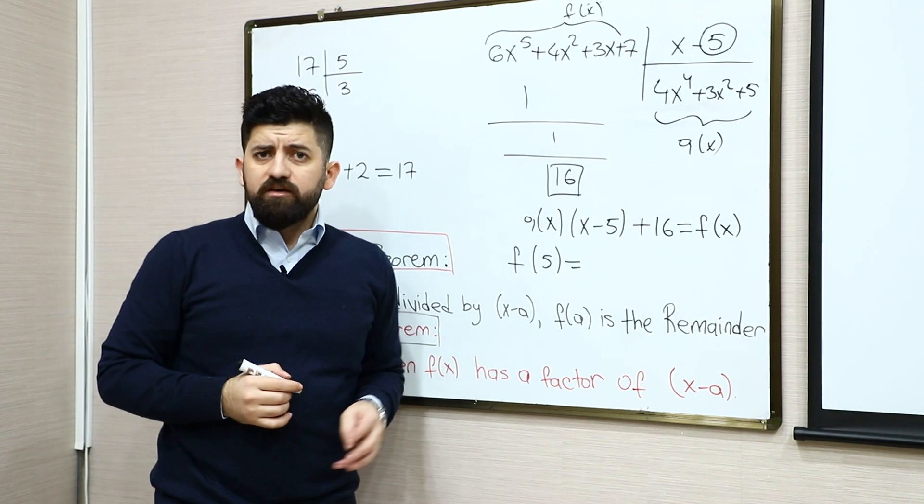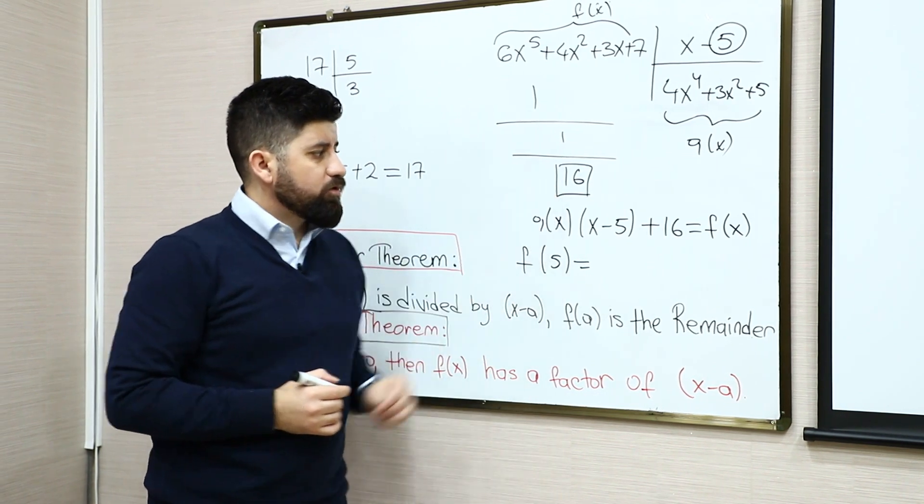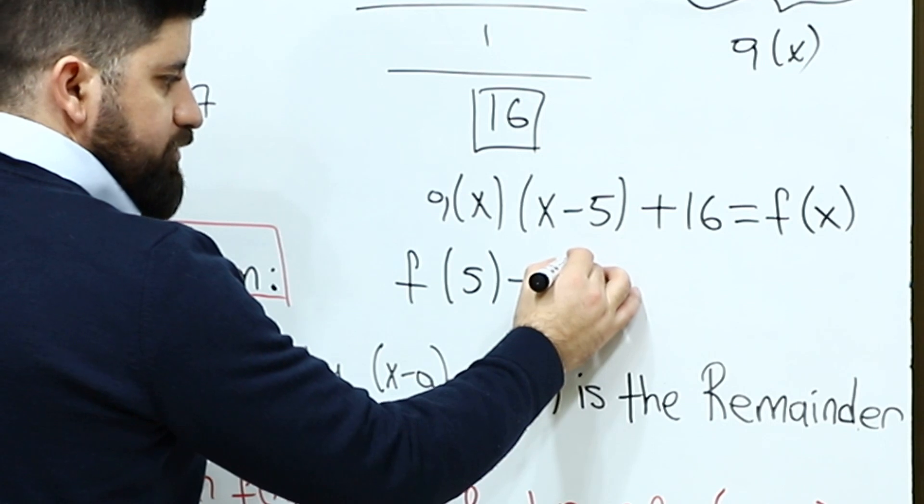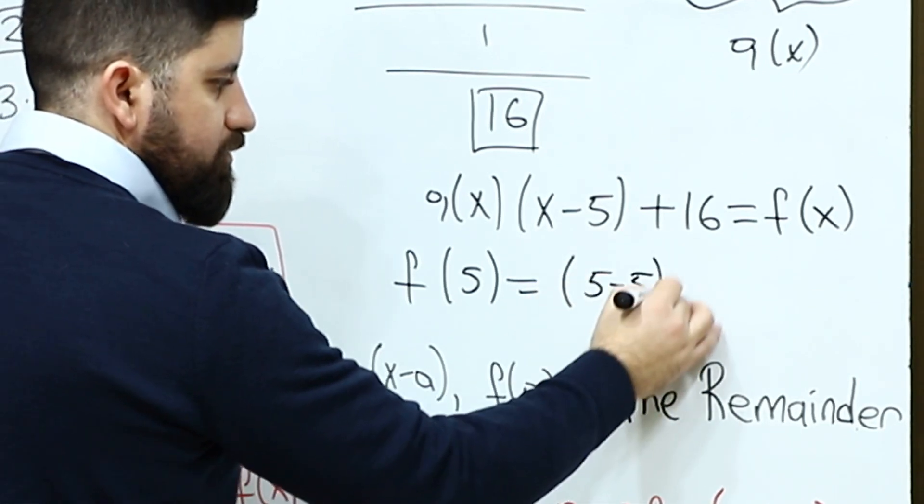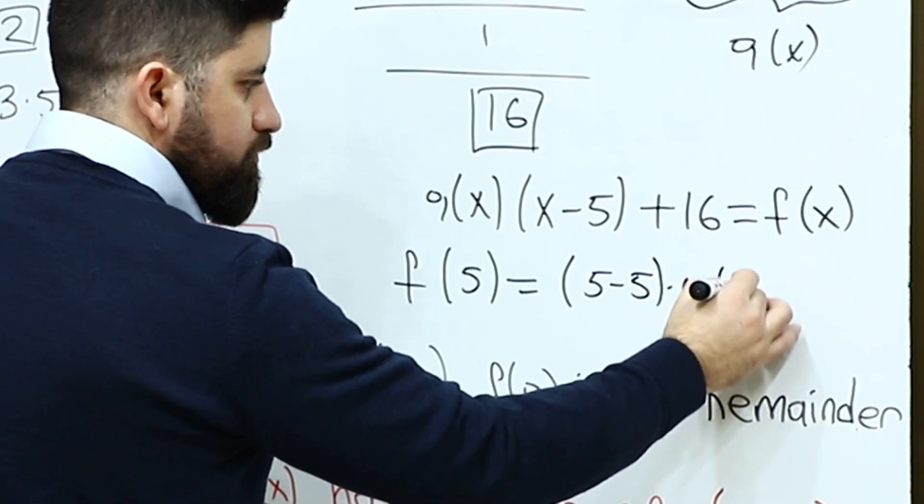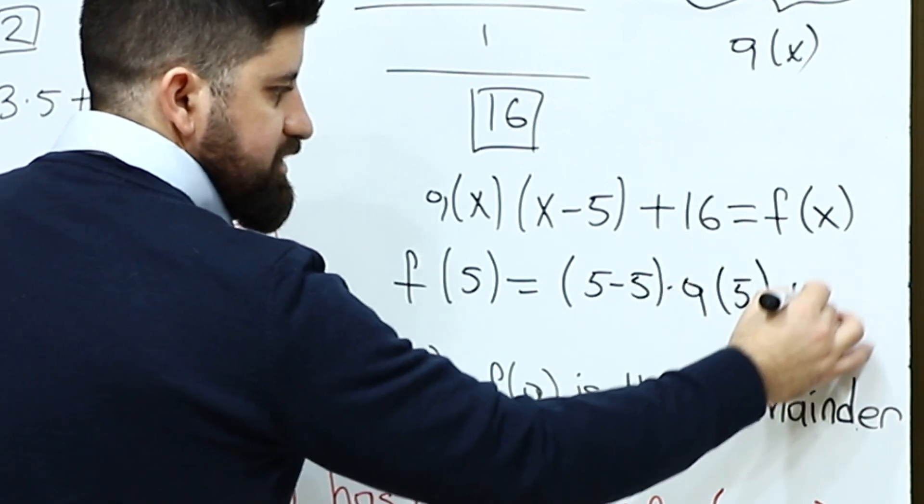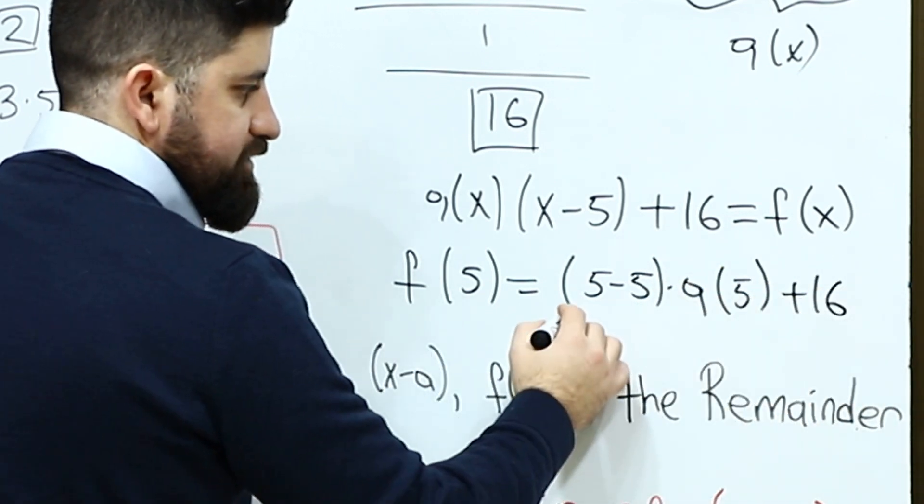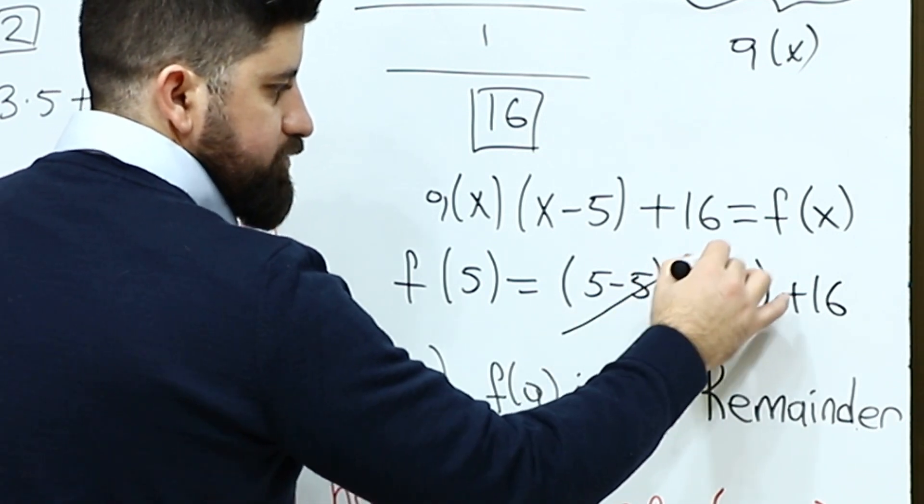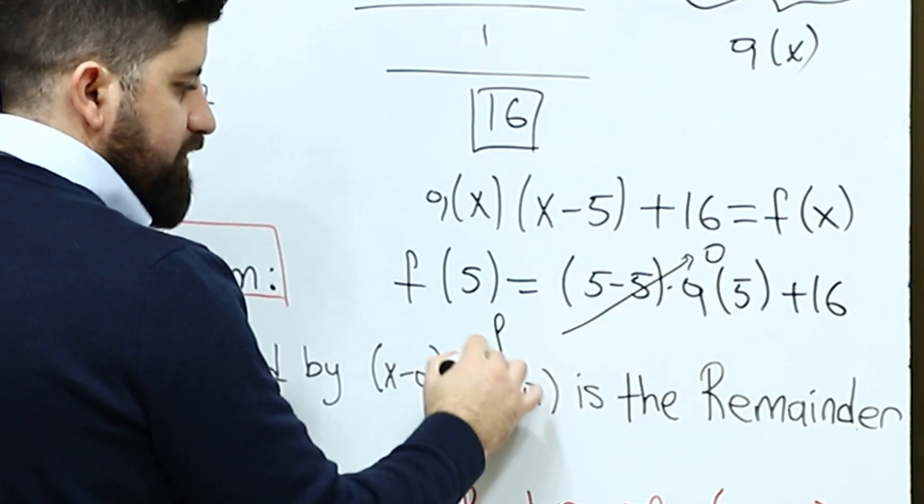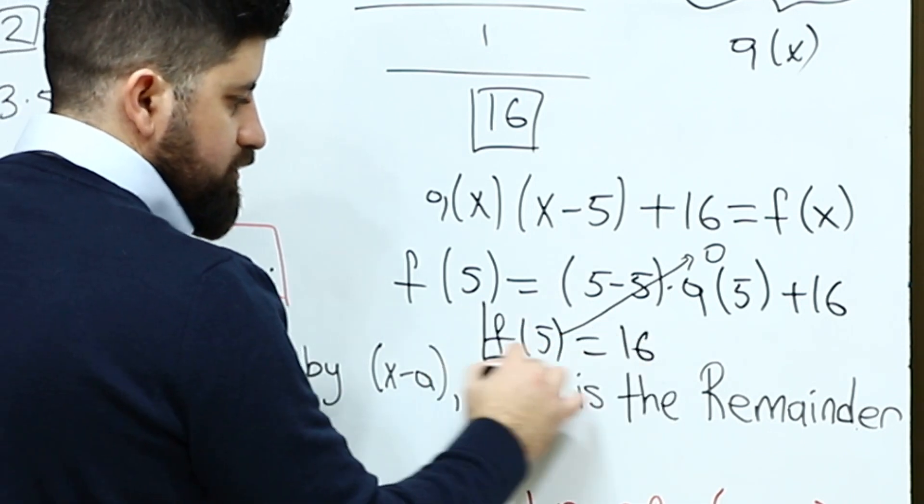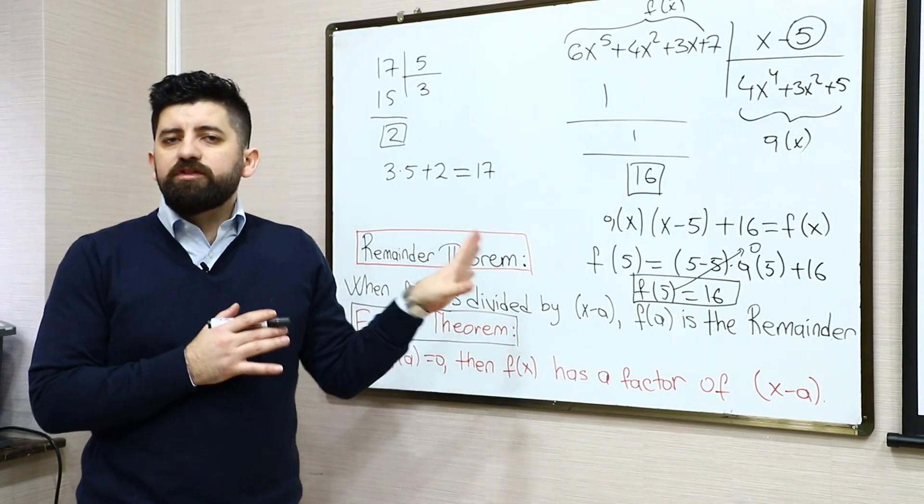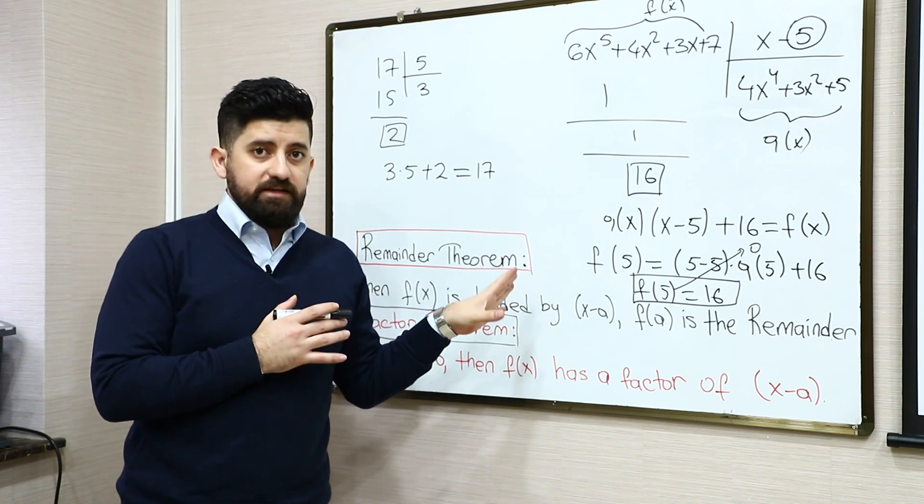Let's see, will we get this 16 or not? So when we just plug in 5, so 5 minus 5 multiply q(5) plus 16. As you see that this part is going to be equal to 0 and f(5) is going to be equal to 16. So this is just what the remainder theorem states.